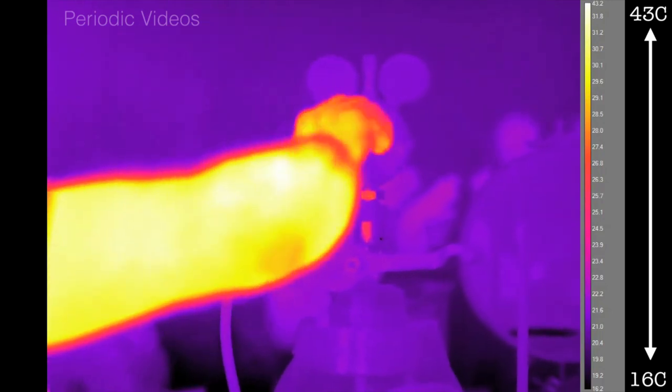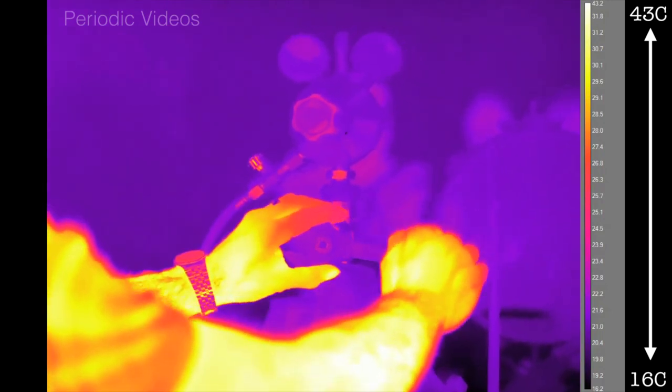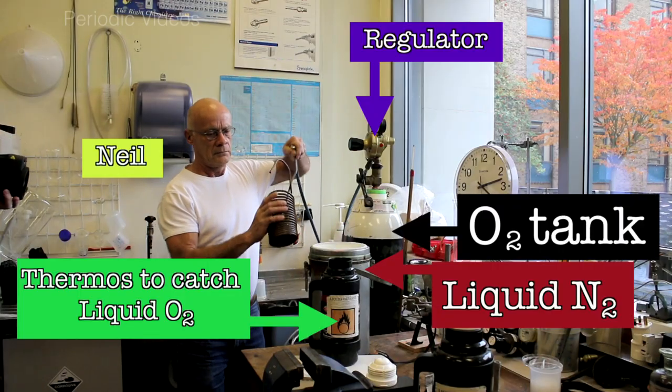You begin with a cylinder that's a high-pressure bottle of oxygen. Now, the pressure of the gas is far too high to use for the experiment, so you have to reduce the pressure with a so-called regulator, which sits on the top of the cylinder. Once you've got it flowing, you flow it through a coil of copper. Copper conducts heat very well, so if you put the coil of copper in the liquid nitrogen and flow the oxygen through, it will liquefy.